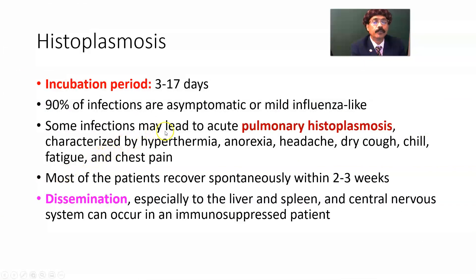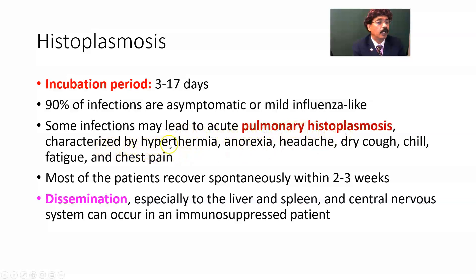The incubation period is 3 to 17 days. 90% of infections are asymptomatic or mild, influenza-like. Some infections may lead to acute pulmonary histoplasmosis, characterized by high temperature, anorexia, weakness, headache, dry cough, chills, fatigue, and chest pain.